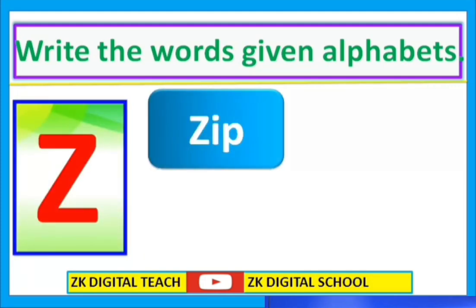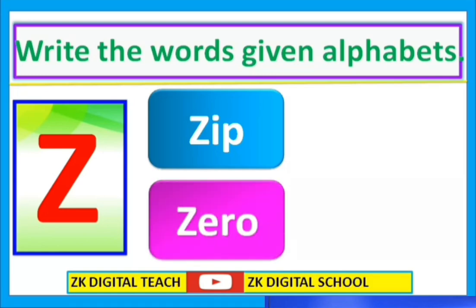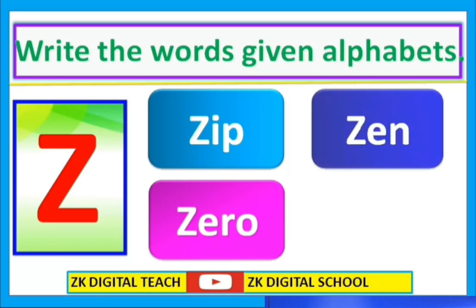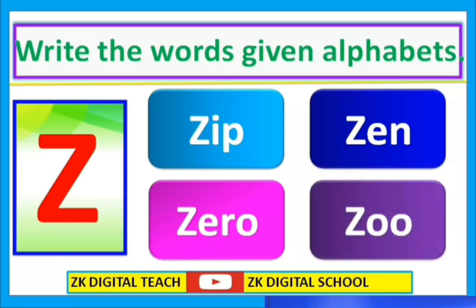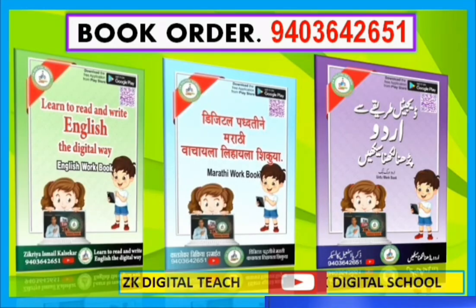Z for Zip, Z-I-P, Zip. Z for Zero, Z-E-R-O, Zero. Z for Zen, Z-E-N, Zen. Z for Zoo, Z-O-O, Zoo.